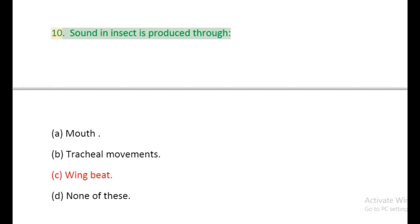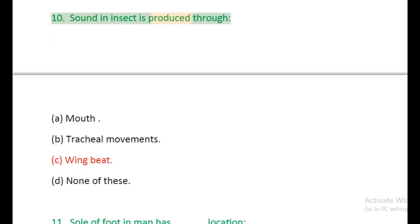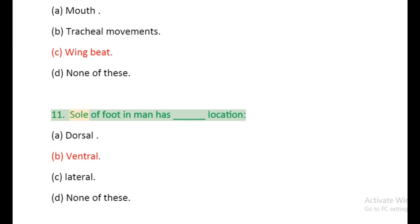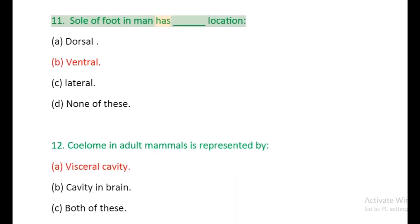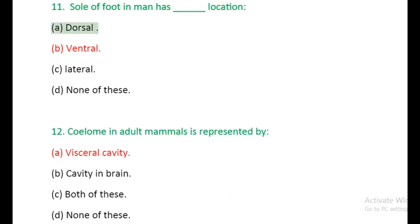Question 10: Sound in insect is produced through: (a) Mouth, (b) Tracheal movements, (c) Wingbeat, (d) None of these. Question 11: Sole of foot in man has location: (a) Dorsal, (b) Ventral, (c) Lateral, (d) None of these.